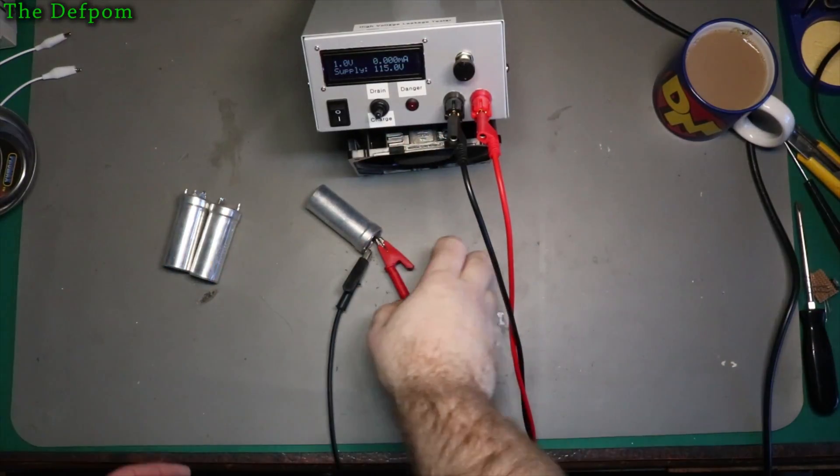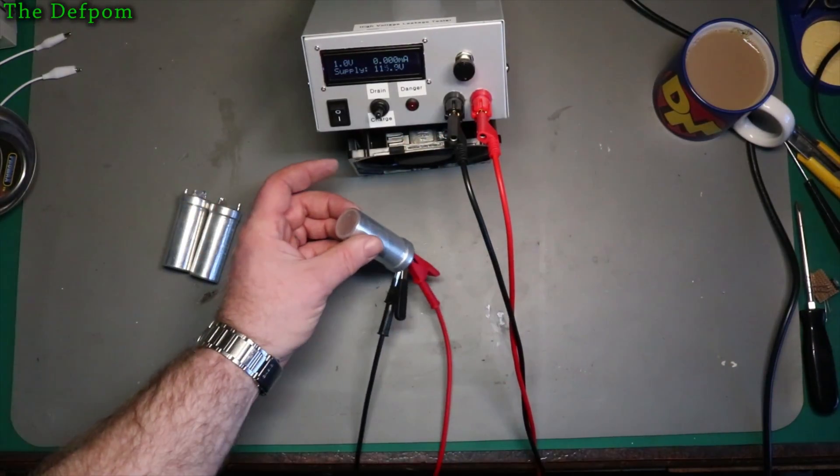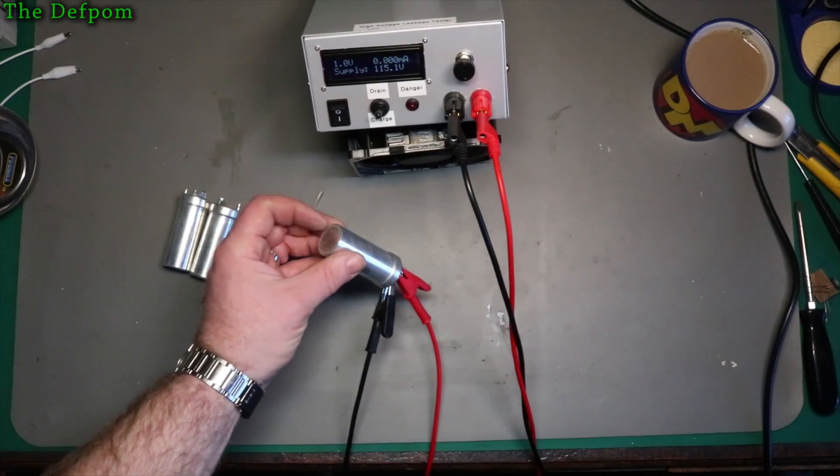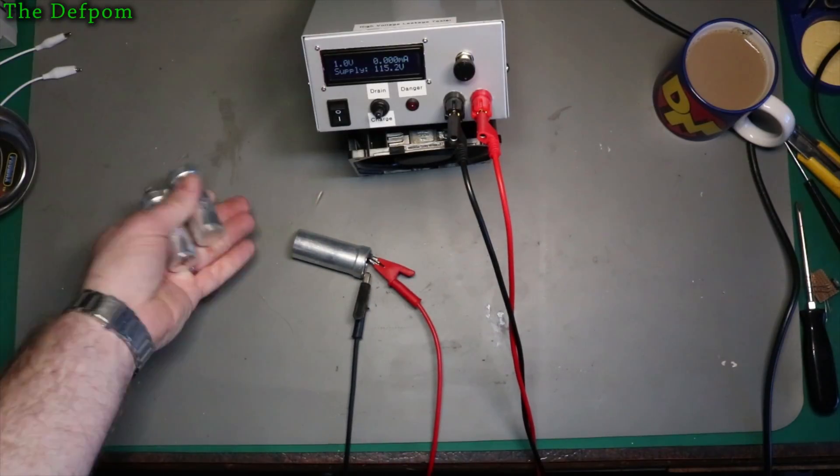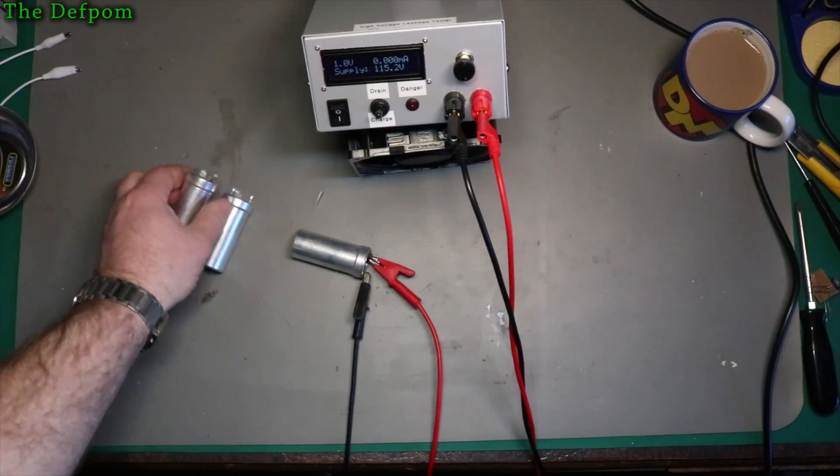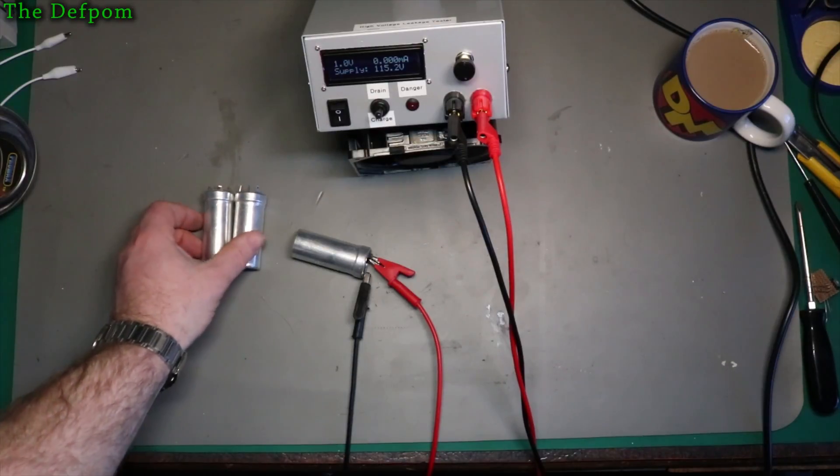Alright, so I'm just going to play my leakage tester here and I've got it hooked up to these caps which I pulled out of the HP 6181B, these are the ones which are on the main power supply, the voltage doubler and just the general smoothing for the main power supply.